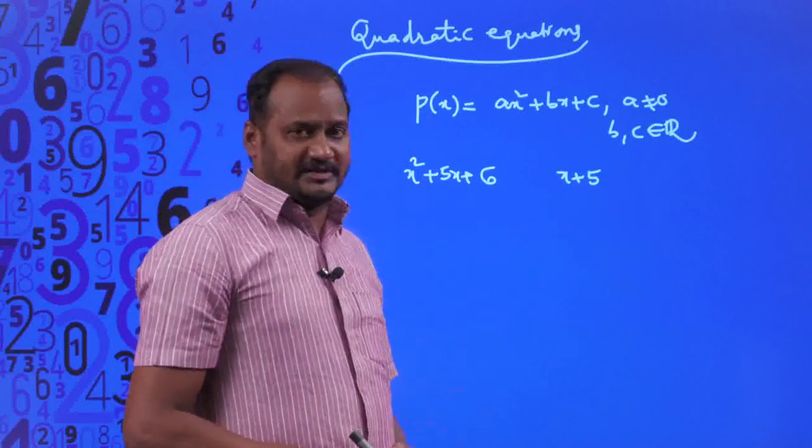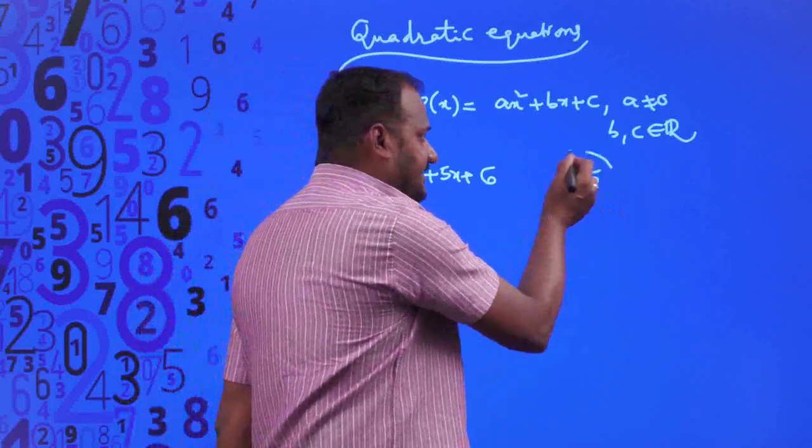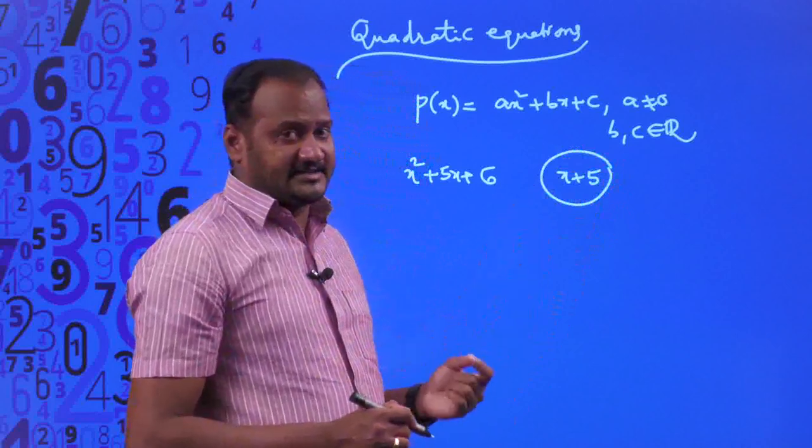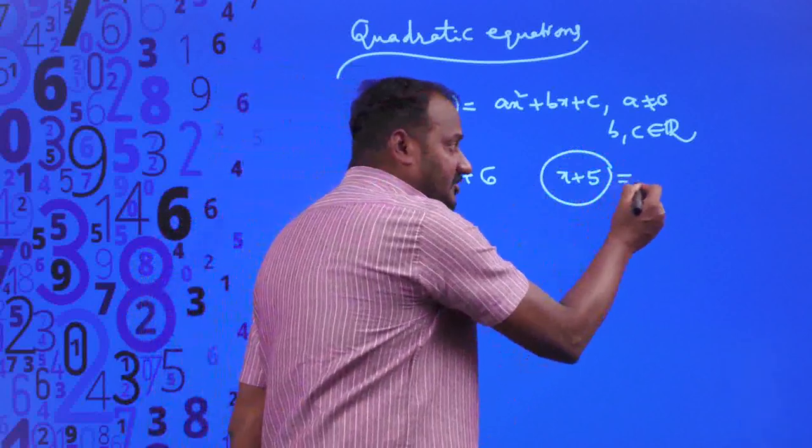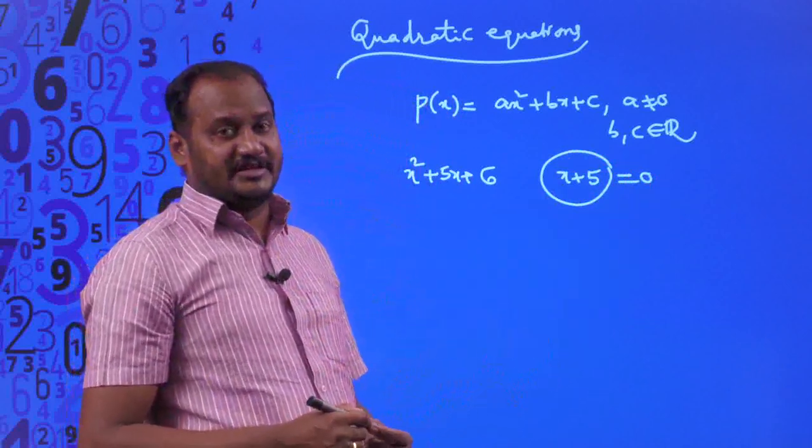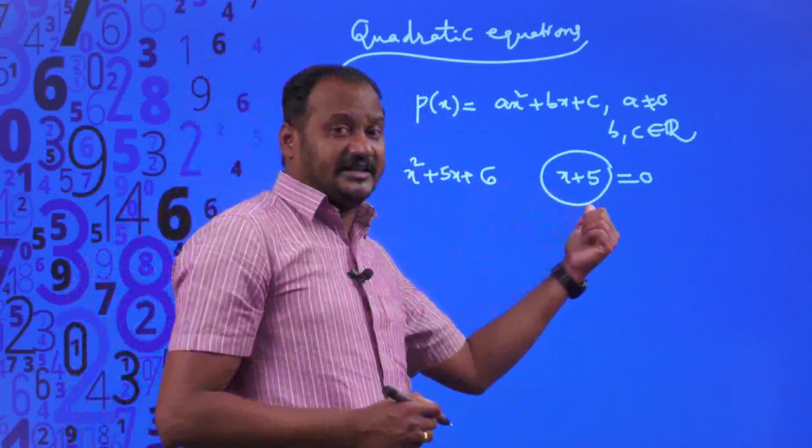In these two polynomials, let us consider x + 5. For what value of the variable x will x + 5 become 0? That value of the variable is said to be a zero of this linear polynomial.